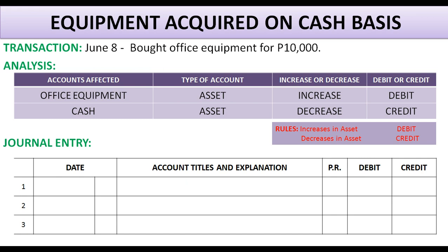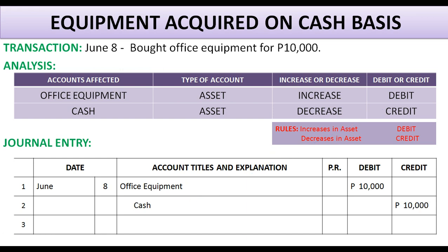Let us prepare the journal entry. The date first: June 8. Debit office equipment, 10,000 pesos. Then credit cash, 10,000 pesos. So let us put our brief explanation: purchased equipment for cash. And then we always check if the total debits and credits are equal, because they should always be equal. If they are not equal, something is wrong.